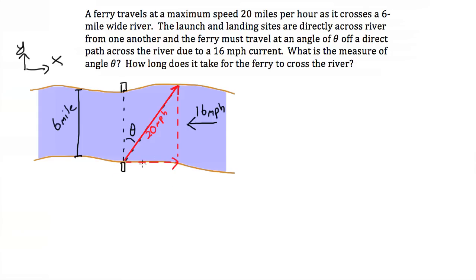So our x component of our velocity has to be 16 miles an hour. Or you can think this arrow has to be 16 long. If this angle here is theta, and assuming that the two sides of our river are parallel lines, then this angle also has to be theta.